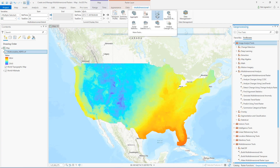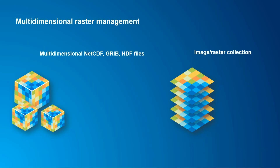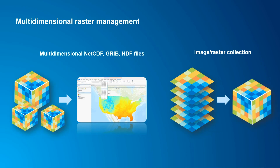ArcGIS Pro provides a suite of tools and capabilities for visualizing, analyzing, and sharing multi-dimensional raster data. Just look up multi-dimensional analysis in the help documentation and you'll find prediction tools, change detection tools, and more. But how do you start working with multi-dimensional raster data? A lot of organizations already have access to netCDF, GRIB, or HDF files, but how do we convert that to a format that can be used in ArcGIS Pro? Or maybe you have a stack of images or rasters collected over time — how do you get that into a format usable with our multi-dimensional analysis tools?